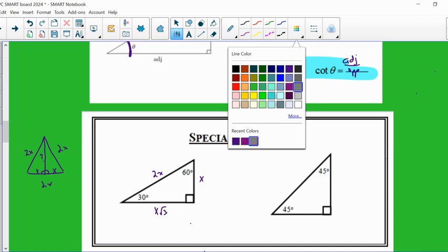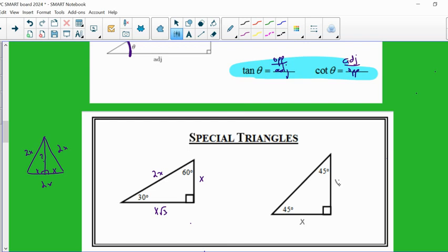Similarly, in a 45, 45, 90 triangle, we can write down the relationship x, x, and x root 2. Again, just right from a Pythagorean theorem. Okay, so we have to know those.